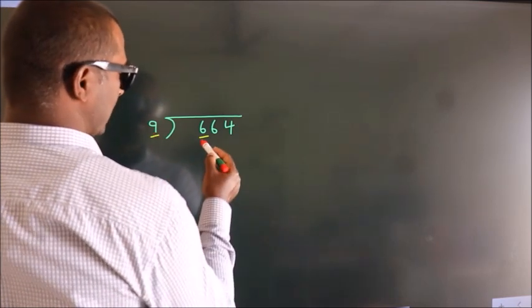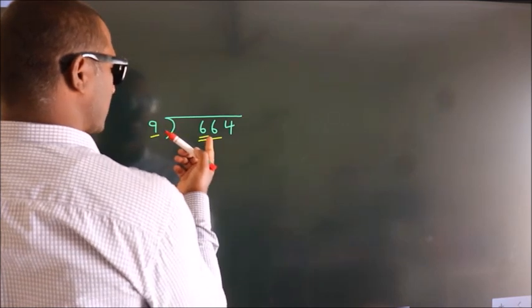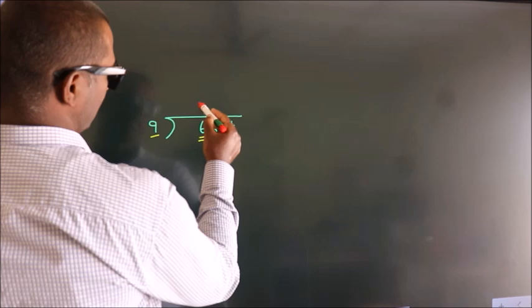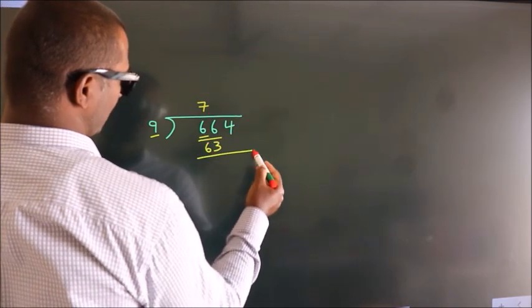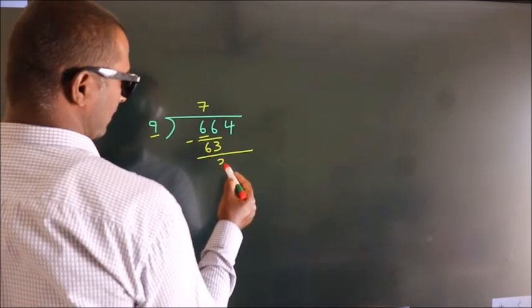So we should take two numbers, 66. A number close to 66 in the 9 table is 9 times 7, which is 63. Now we subtract and we get 3.